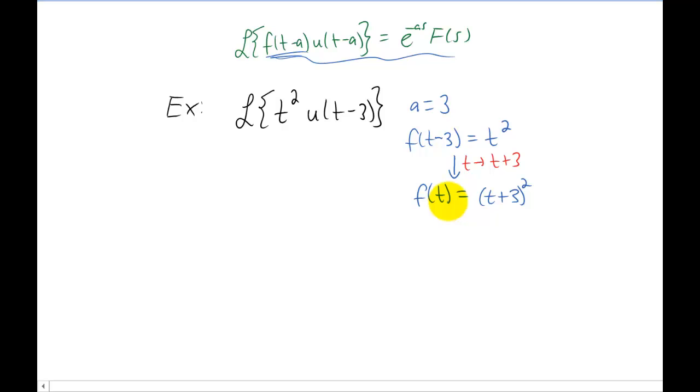Now the whole reason we wanted little f of t was so that we could get capital F of s. And the way that we get capital F of s is we take a Laplace transform. Of course the only way to actually do this Laplace transform is to foil this thing out. You can take the Laplace transform of each individual piece.